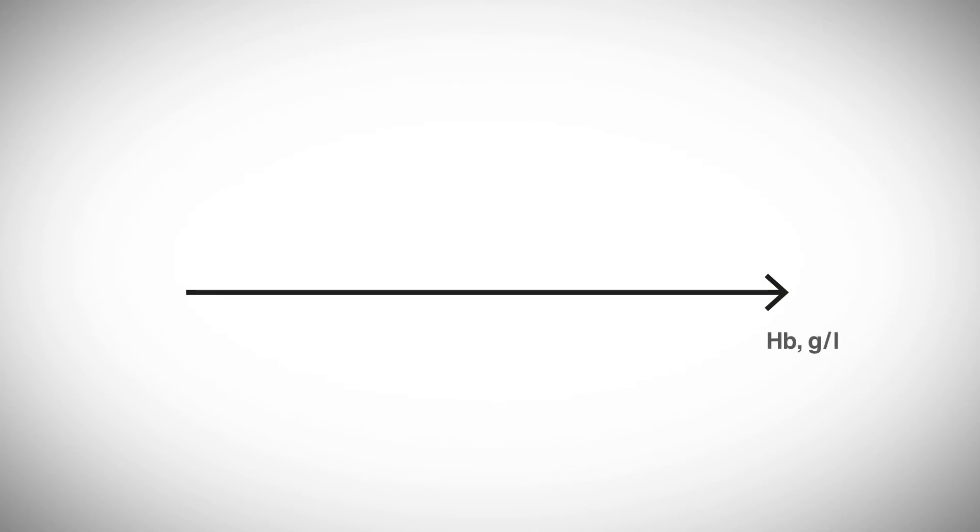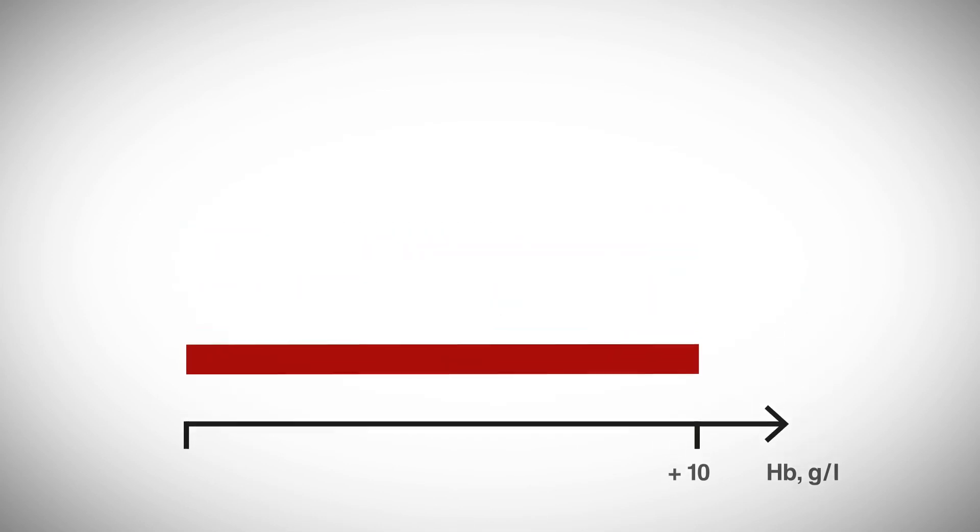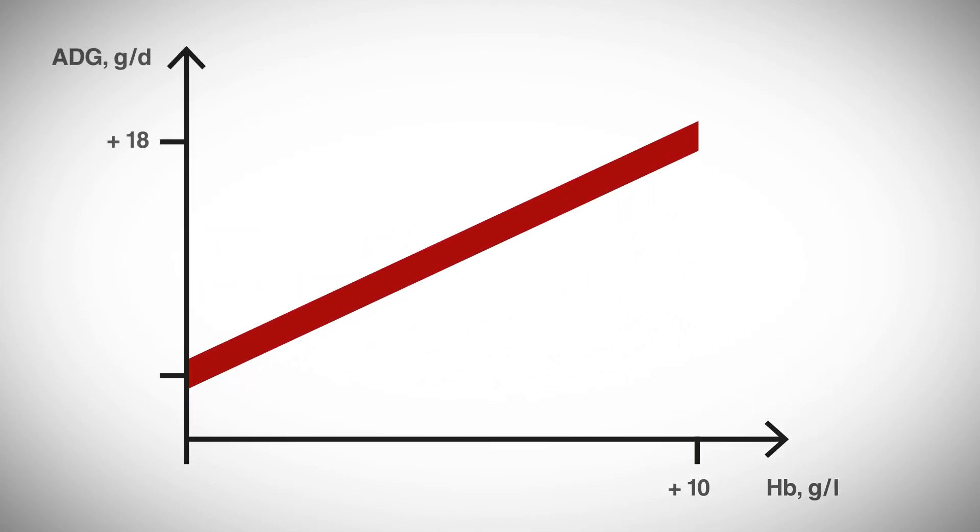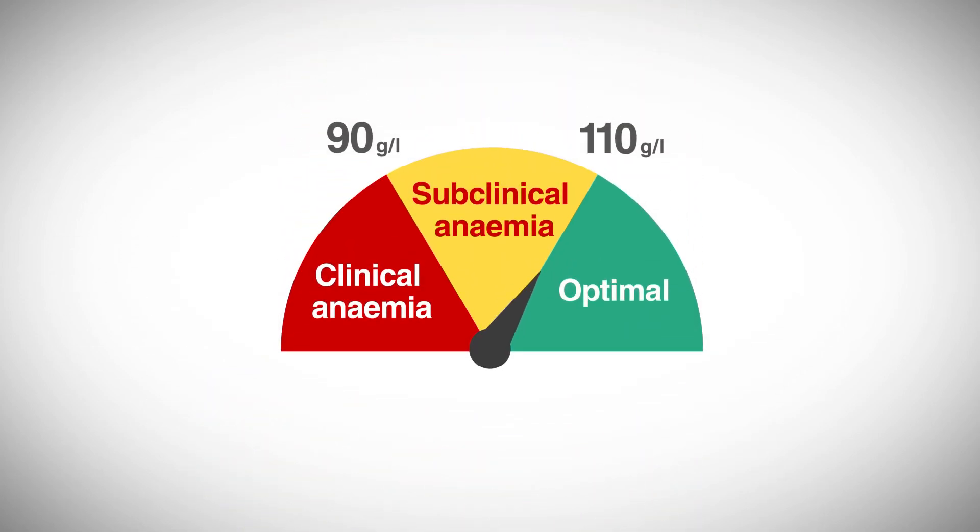In fact, each time the pre-weaning hemoglobin level is increased with 10 grams per liter, the weight gain post weaning increases with 18 grams per day. And we know that optimized post weaning growth requires hemoglobin levels above 110 grams per liter.